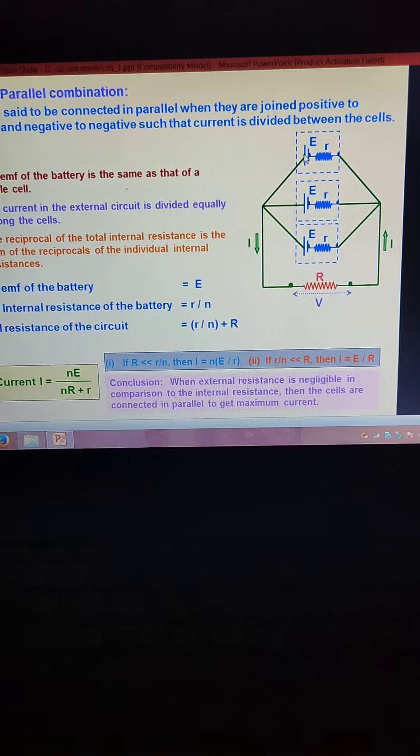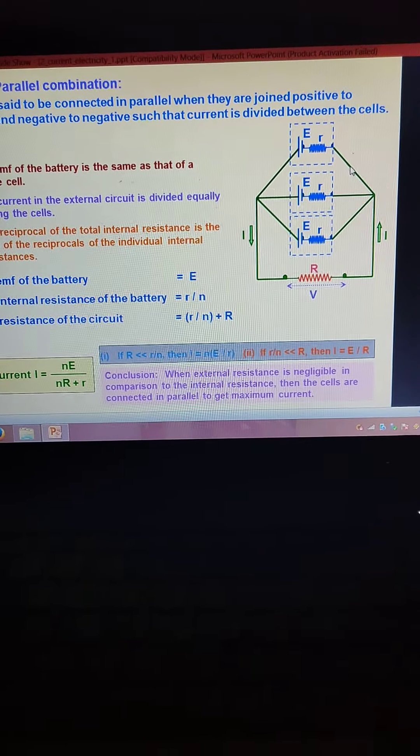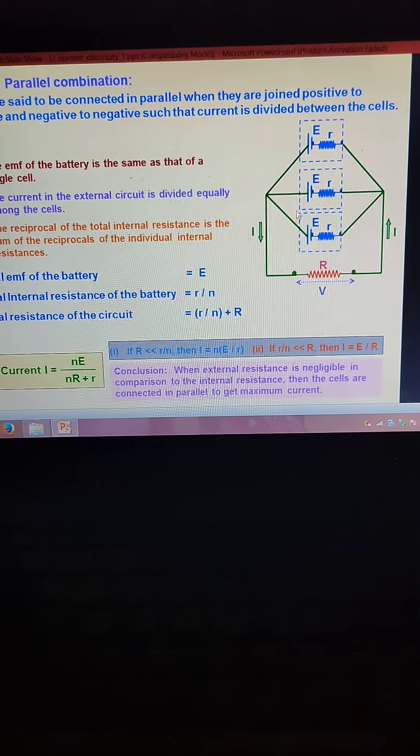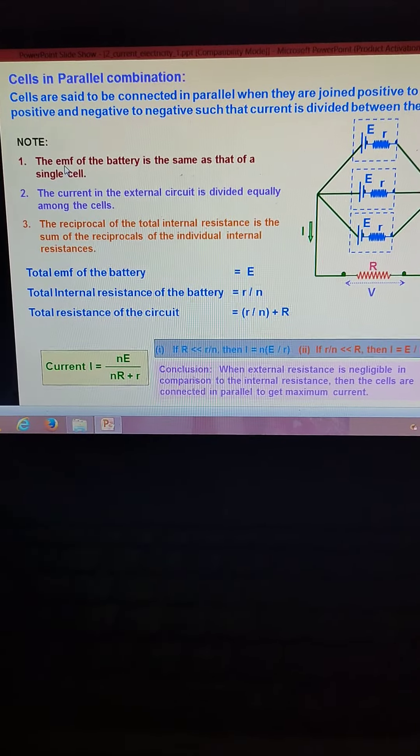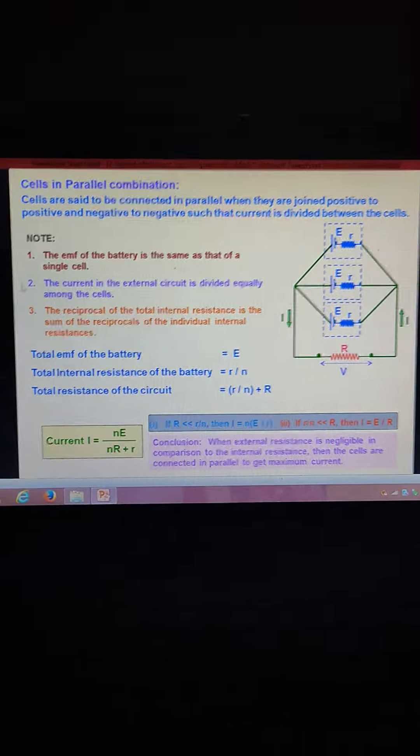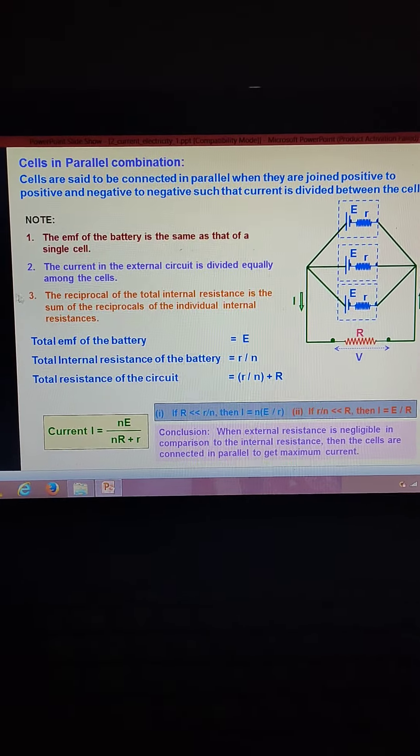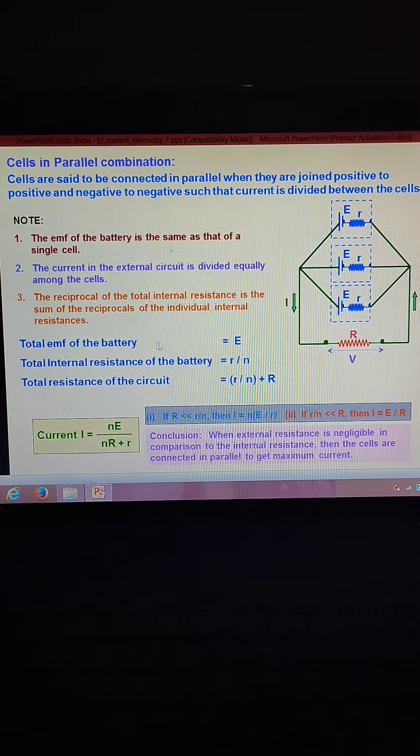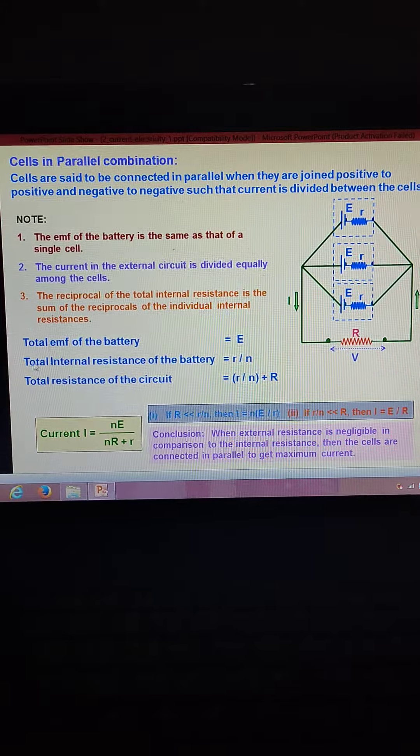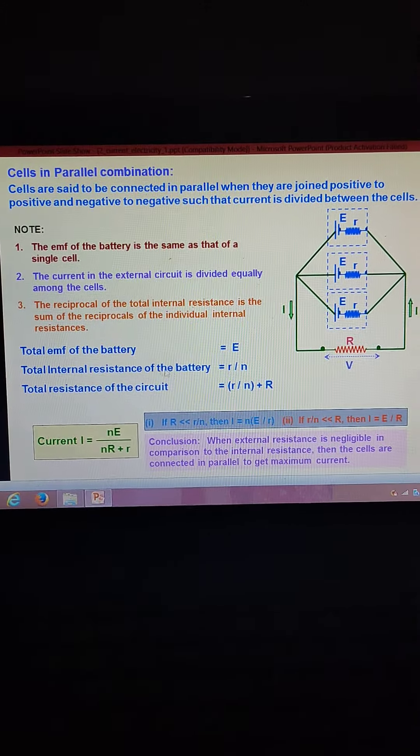In this parallel combination, positive to positive and negative to negative are connected. Therefore, the total EMF of the battery is E, and the total internal resistance of the battery is